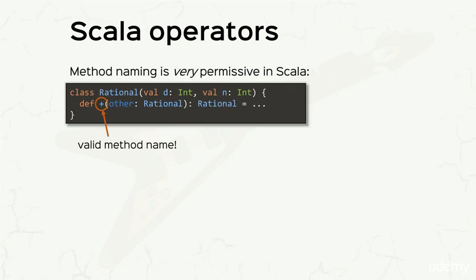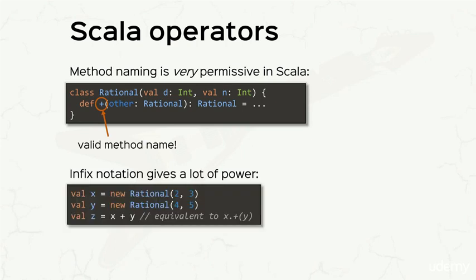With that kind of naming, and with infix notation, we can write something like this for example, where we define two rationals, and we obtain a third by just adding the two. Notice in the comments section, the equivalent notation x dot plus with the parameter y, but we'd much rather prefer the infix notation, as it's so much more natural.